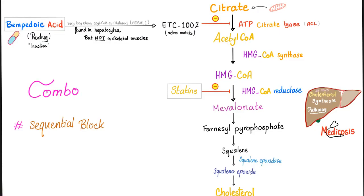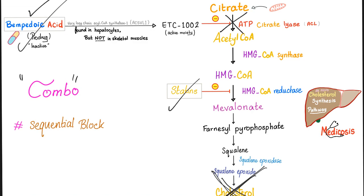The pathway again: citrate → acetyl-CoA → HMG-CoA → mevalonic acid → cholesterol. Bempidoic acid is a pro-drug; what actually inhibits ATP citrate lyase is ETC-1002. Statins inhibit HMG-CoA reductase. When you combine bempidoic acid with a statin, you've inhibited two different steps in the cholesterol synthesis pathway — the ATP citrate lyase and the HMG-CoA reductase. Two steps in the same pathway is called a sequential block.